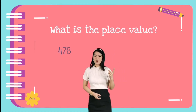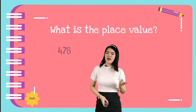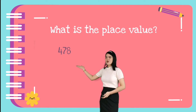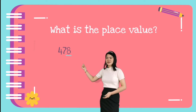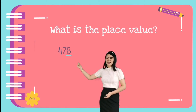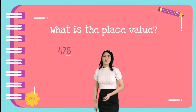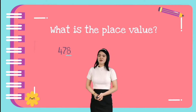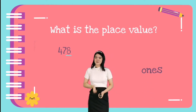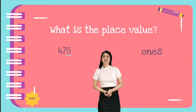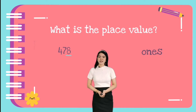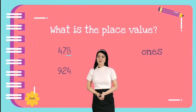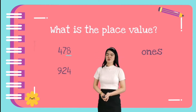Let's take a look. What is the place value of 478? The underlined number is 8. Where is the place value of number 8? Very good — it is in the ones place.